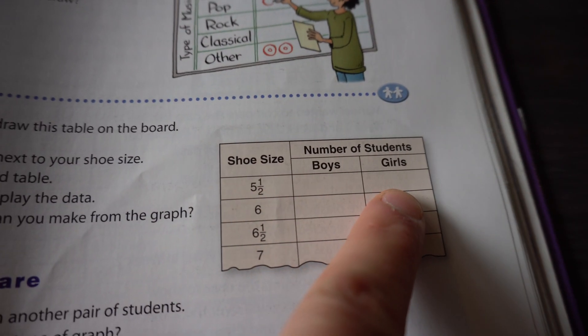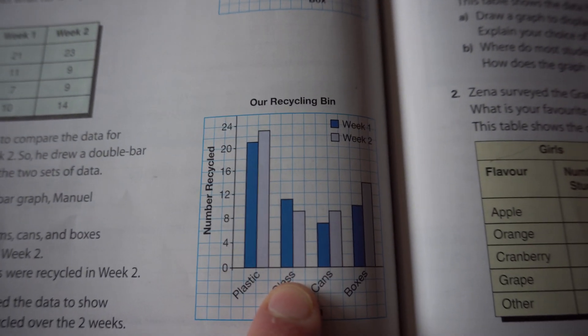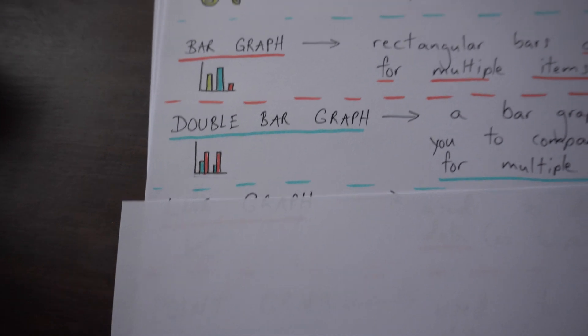Sometimes too you might have a boys and a girls choice where you could do a double bar graph, and one could represent the boys and one could represent the girls. So that's the image of a double bar graph, just a little bit more going on.